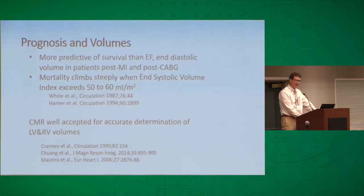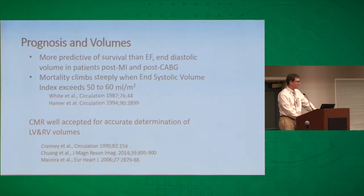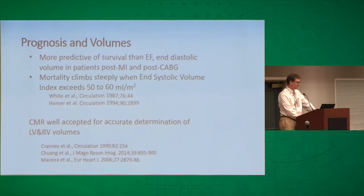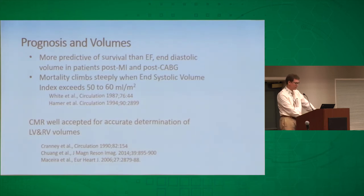One of the most important reasons cardiac MRI is useful for studying heart failure is that volumes can be accurately measured — probably more accurately than any other non-invasive technique. Volumes are important because it's been known since the 1980s that as the end-systolic volume increases, mortality climbs steeply once you go over 50 to 60 milliliters per square meter of body surface area. This is known in patients with valvular heart disease, post-MI, and post-CABG. Cardiac MRI is a very nice way of measuring those volumes.